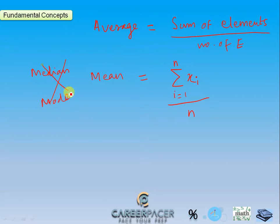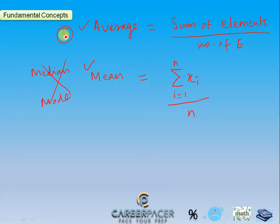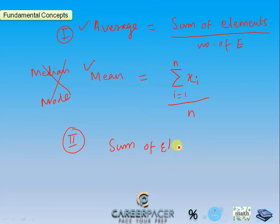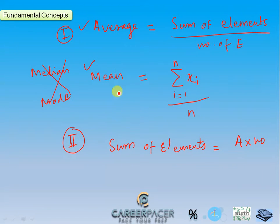If you don't know median and mode, or if you don't understand mean and average, then this formula will work. The first formula is the average. We can rearrange this formula. The second formula gives us the sum of elements, which is equal to average multiplied with the number of elements. These are the two formulae we will use in every question.